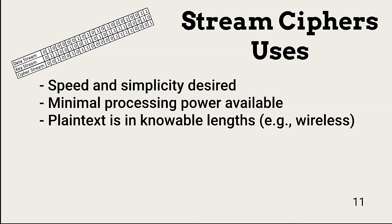Stream ciphers are faster than block ciphers, so they're useful when speed is needed. They also use less processing power, so environments with minimal processing and power capabilities are a good fit. Stream ciphers are better when short data streams or known length data streams are used, as in wireless. Block ciphers can result in a lot of padded bits because they require a set block size for processing, whereas stream ciphers do not use padding.